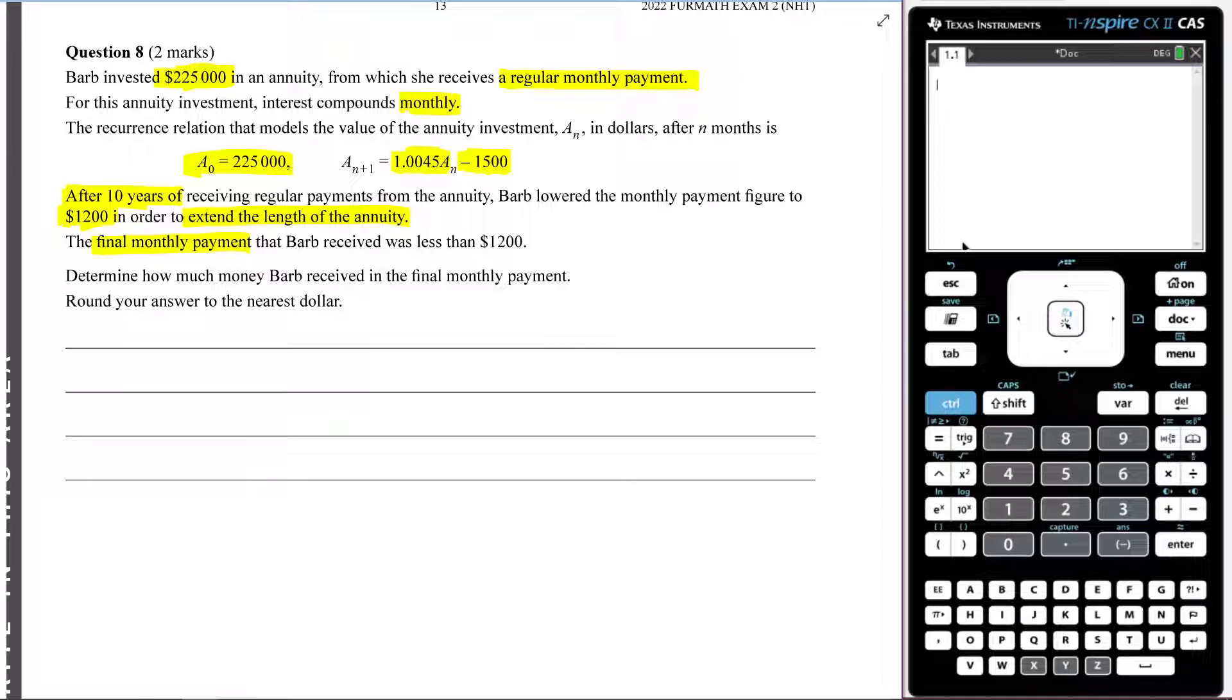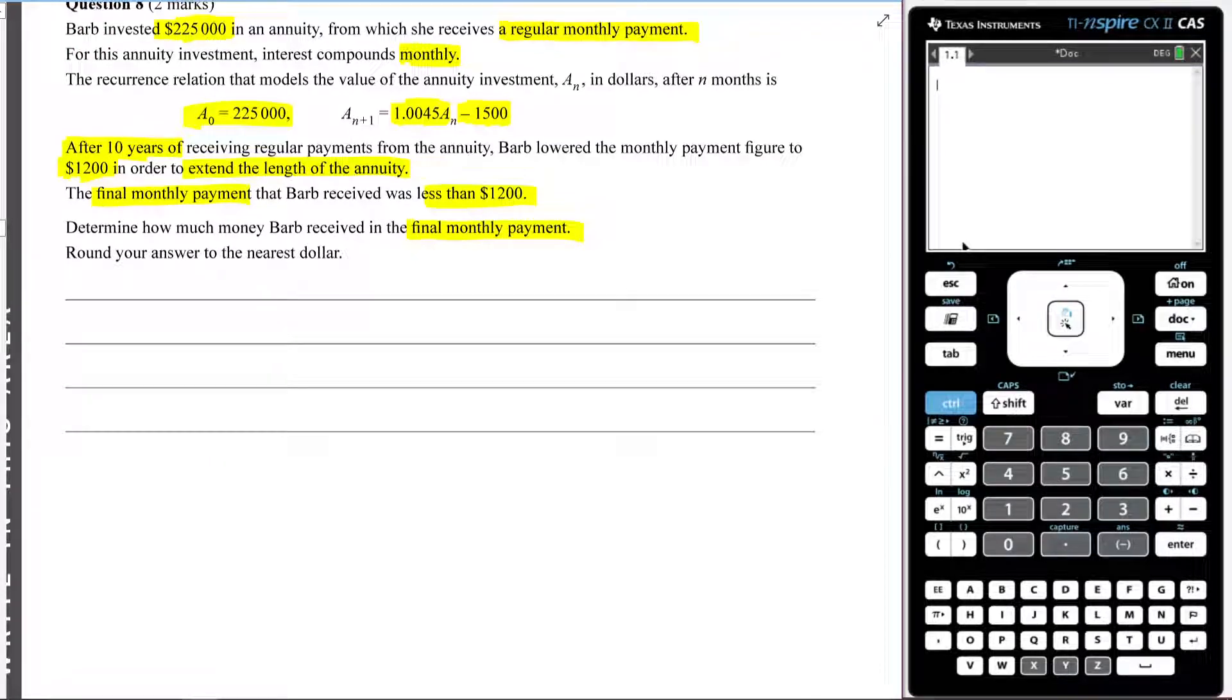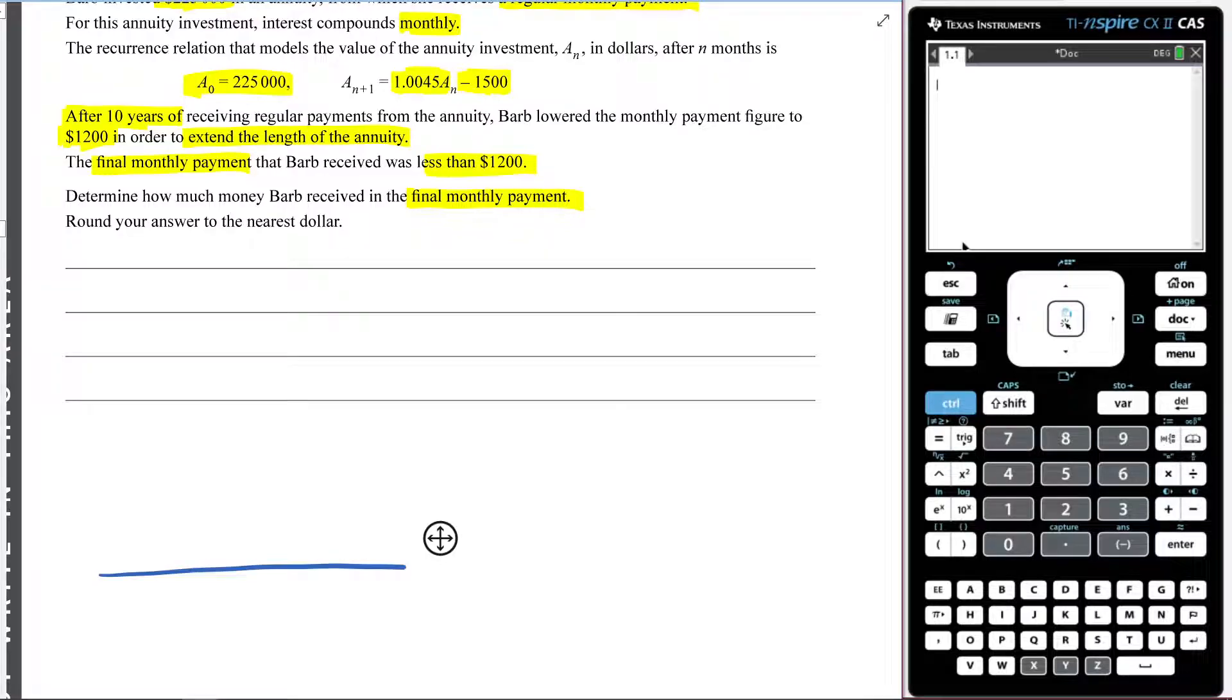The final monthly payment that Barb received was less than $1,200. Determine how much money Barb received in the final monthly payment round your answer to the nearest dollar. To answer this question, I think I would begin by drawing from myself a little bit of a timeline, just to give myself a bit of a visual of what's going on.